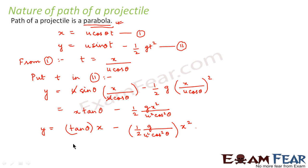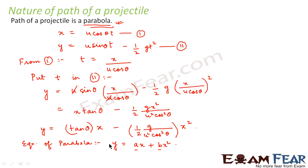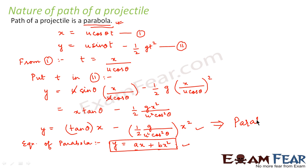If you observe this equation carefully and compare it with the equation of a parabola from mathematics — the general form is y = ax + bx², where a and b are constants — you see that both equations are of the same form. Here a = tanθ and b = g / (2u² cos²θ). These terms are constants because θ, g, and u are all known. Therefore the path that a projectile follows is always a parabola.